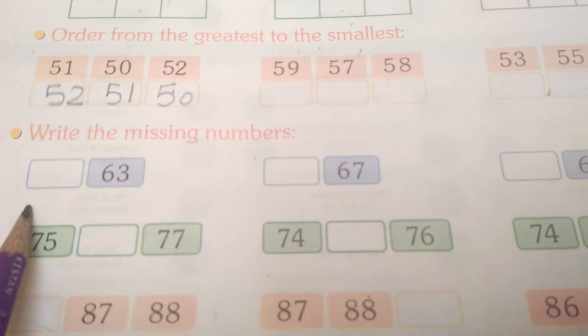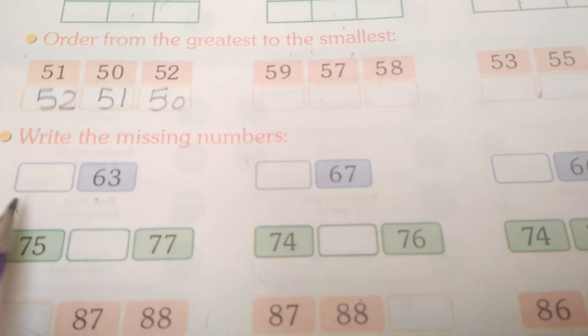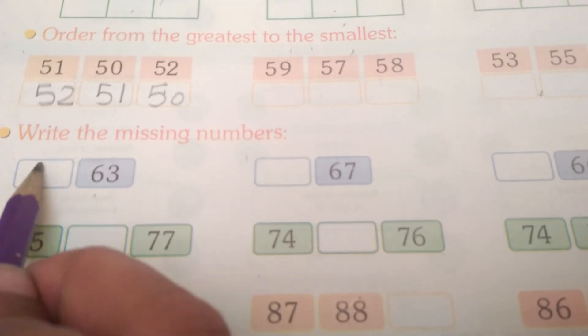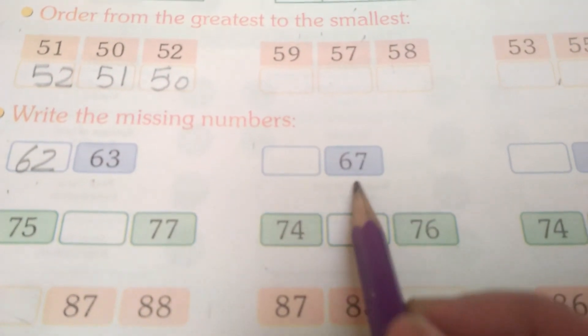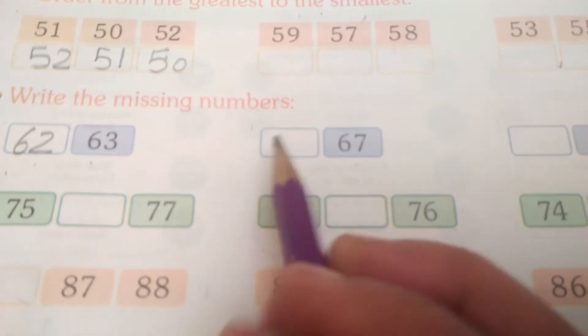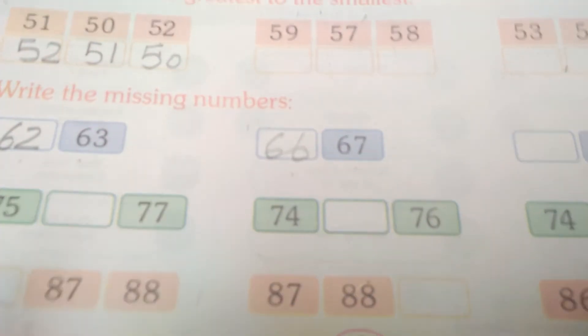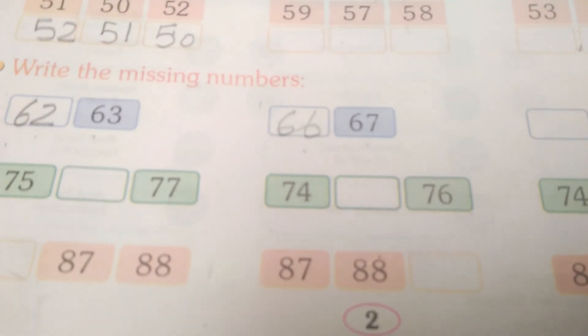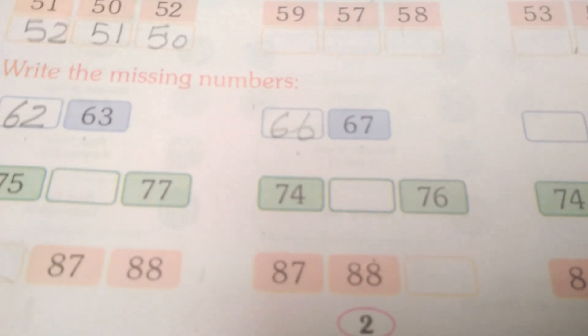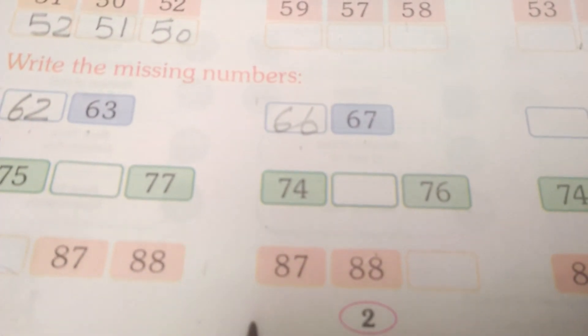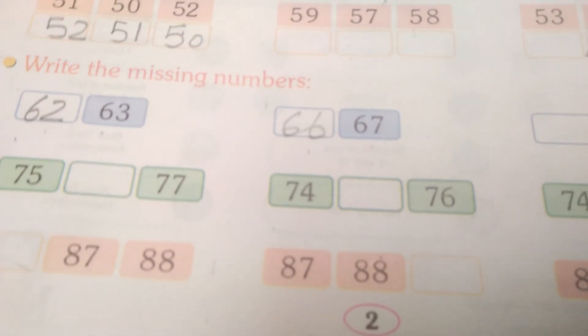What are the missing numbers? What will you write? 63, 62. What will you write? 67 and 66. These missing numbers you have to complete. This is the table of three. Take care, Allah Hafiz.